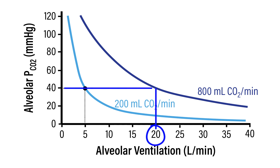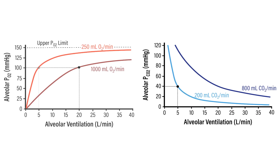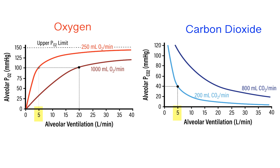It is interesting that under normal resting conditions, an alveolar ventilation of 5 liters per minute produces an alveolar PO2 of 100 millimeters of mercury and an alveolar PCO2 of 40 millimeters of mercury — both approximately normal values. Also interesting is that in scenarios where oxygen consumption and CO2 production both increase, both can be corrected by increasing alveolar ventilation to approximately 20 liters per minute. So under most cases, changes in alveolar ventilation can appropriately correct both CO2 and O2 partial pressures simultaneously.